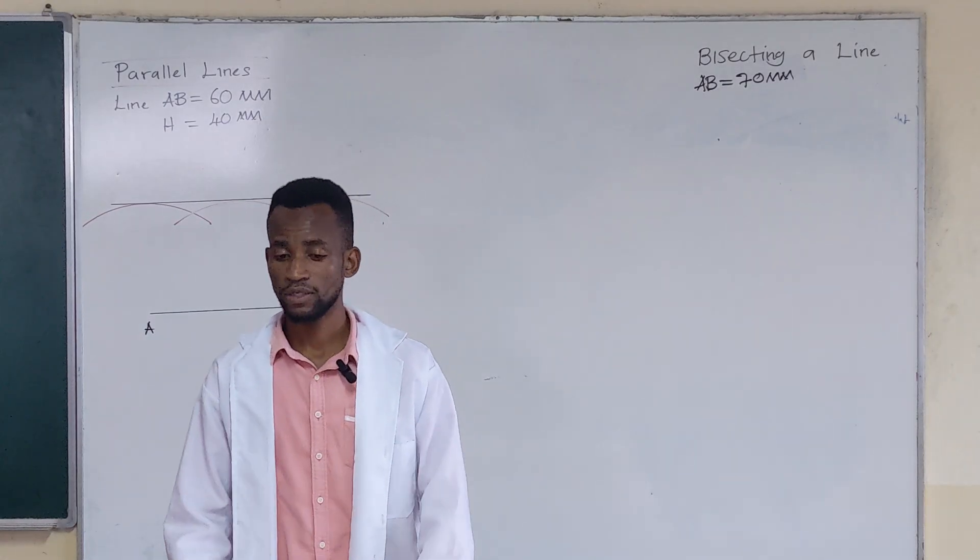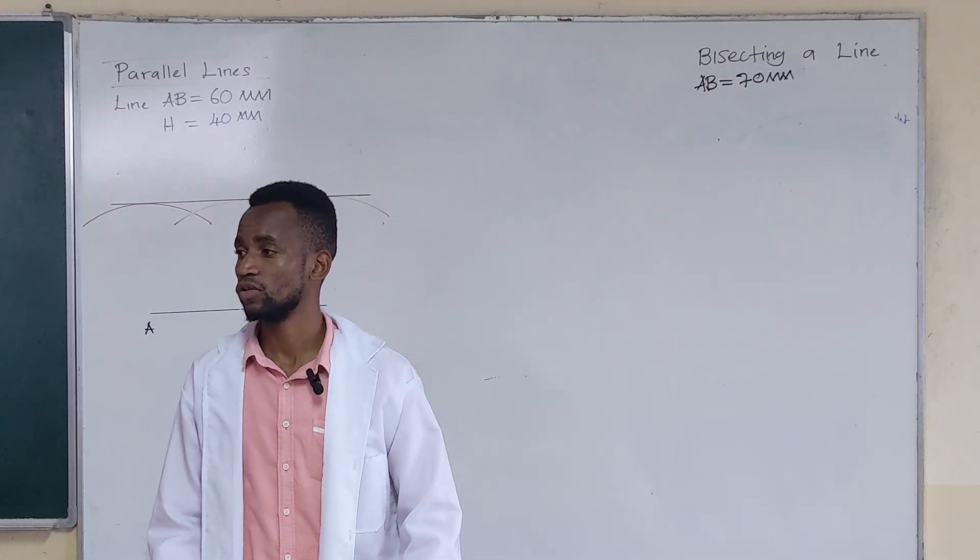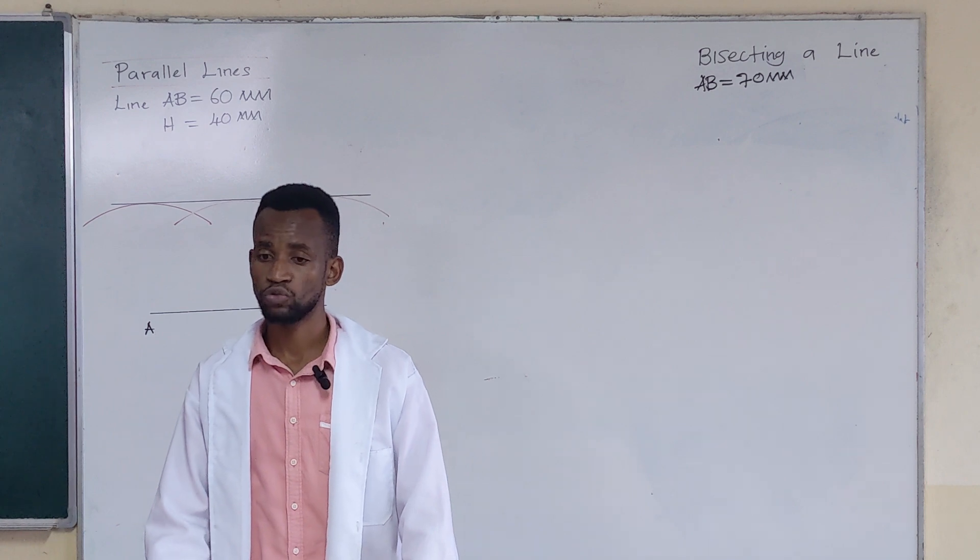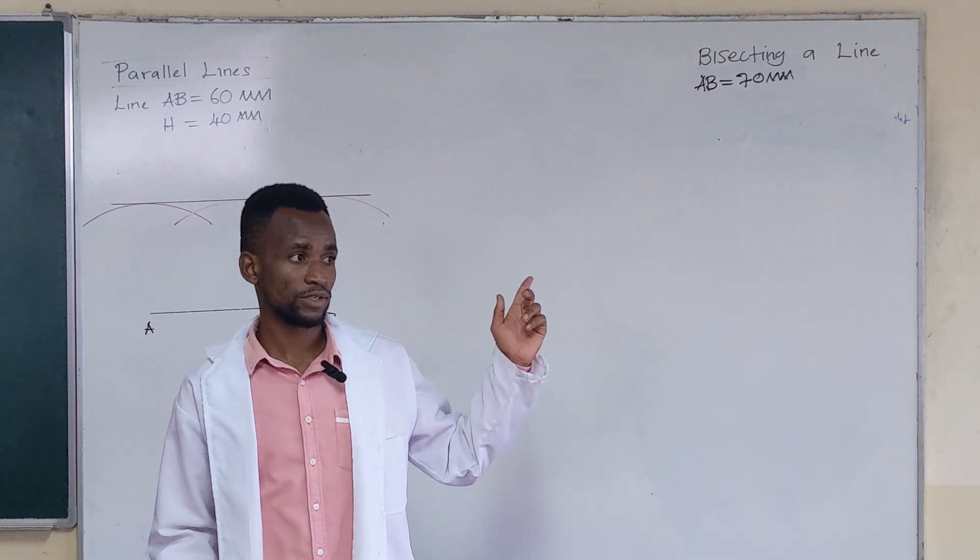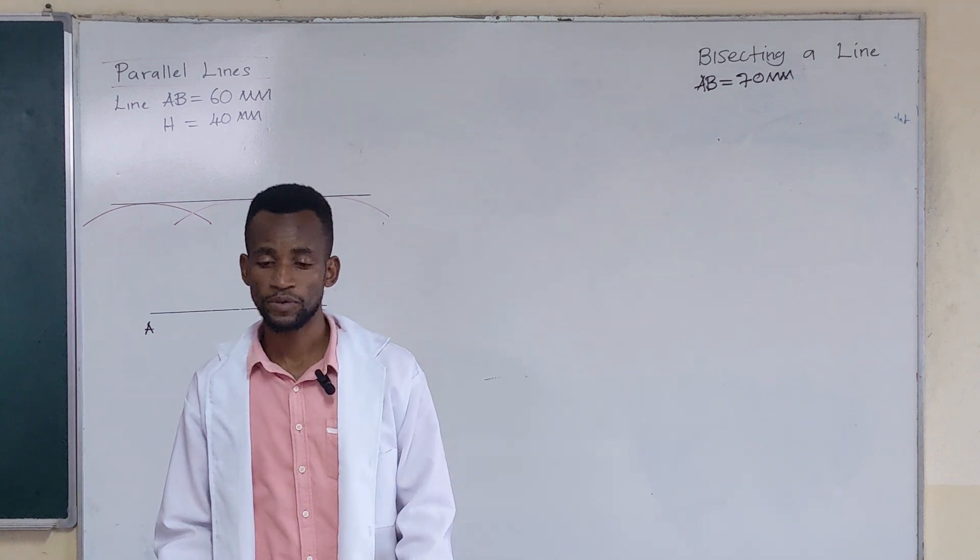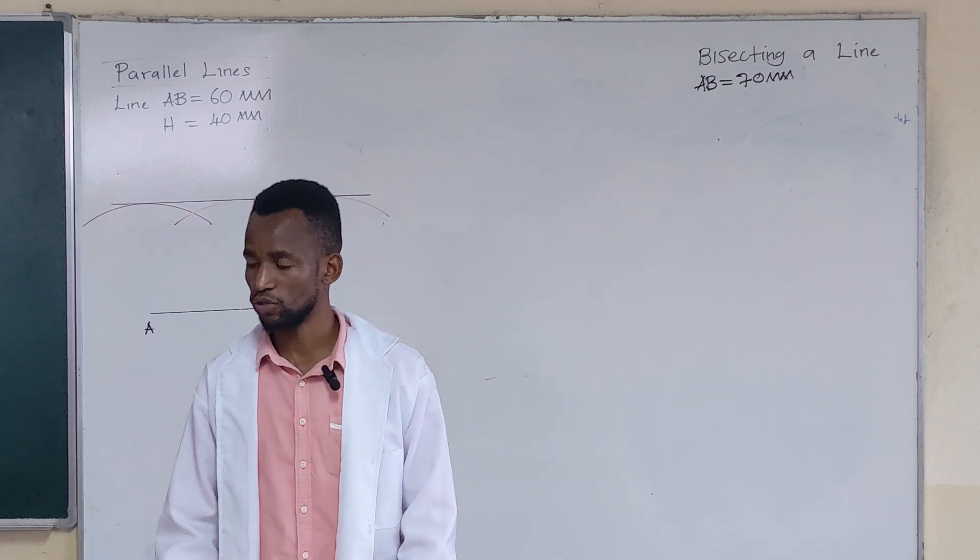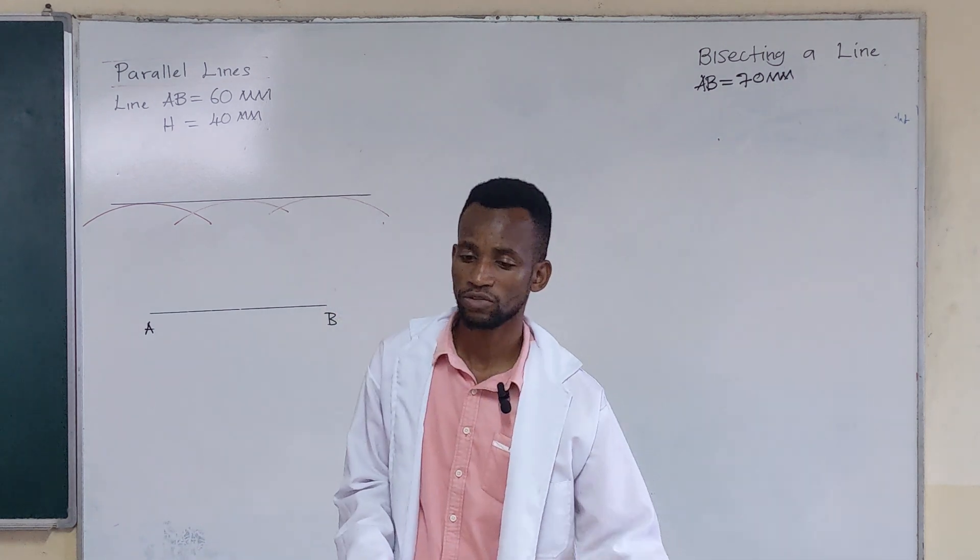When we talk of bisecting, we are simply talking about dividing into two. So here we want to bisect a given line which is 70 millimeters. This means we want to find the midpoint of that line. Let's draw a line that is equal to 70 millimeters.